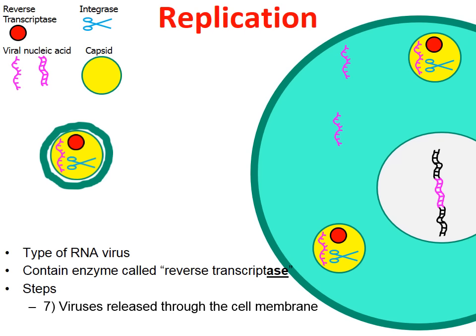The same thing happens with the other retroviruses in the cell. This is how new viruses are created and released to repeat the cycle. Eventually these immature viruses go through a series of chemical changes to become mature, and then they repeat the cycle and infect other cells.